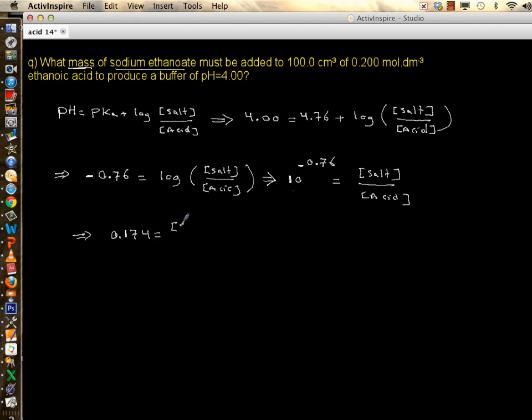This is equal to concentration of salt over concentration of the acid. Now concentration of the acid I have is 0.2, so let's just plug it in. So concentration of salt is nothing but 0.174 multiplied by concentration of the acid which is 0.2, and when you do this, concentration of salt comes to life which is 0.0348.